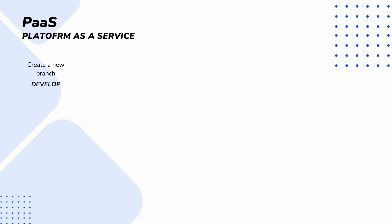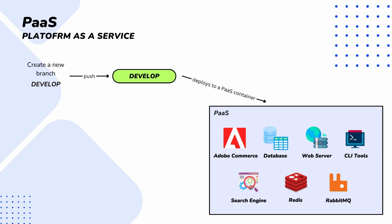So how does it work? It's pretty simple. You create a new branch — for example, named 'develop' — and when you push it, Adobe Commerce on Cloud will create a so-called integration environment. The integration environment's name will be 'develop', and once it's done you get a ready-to-use platform with Adobe Commerce, a database, web server, CLI tools — basically everything that Adobe Commerce needs in order to be running. So with just one simple creation of a branch you can set up a new integration environment with Adobe Commerce ready for use.